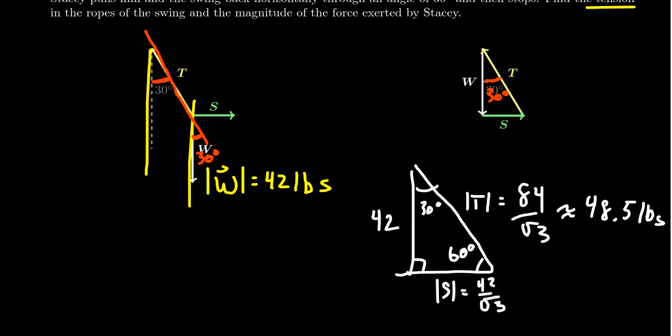So the rope is holding what feels like about 50 pounds. So that's heavier than Danny. Stacy, on the other hand, she's holding him up. You take 42 over the square root of 3, you'll end up with 24.2 pounds, like so.